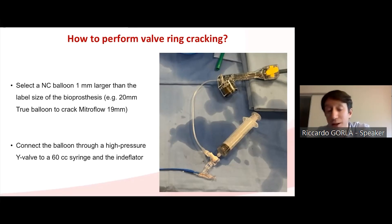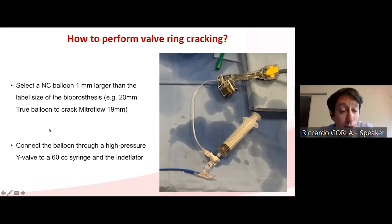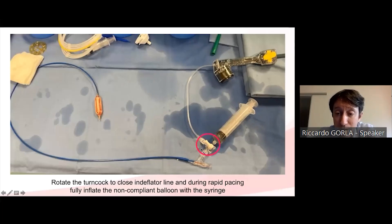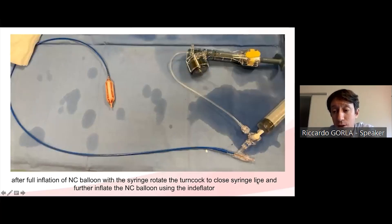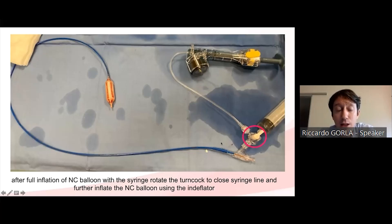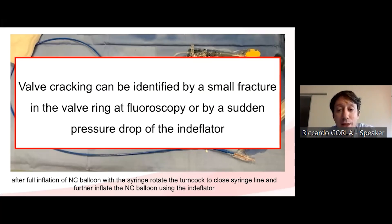To practically perform valve ring fracture, select a non-compliant true balloon with a diameter at least one millimeter greater than the label size of the bioprosthesis. For example, to crack a 19mm Mitraflow, choose a 20mm true balloon. Connect the balloon via a high-pressure Y-valve to both a syringe and an indeflator. Start rapid pacing, close the indeflator line, and inflate the non-compliant balloon through the syringe. At maximal inflation — still under rapid pacing — rapidly turn the stopcock to close the syringe line and use the indeflator to push up the atmospheres.